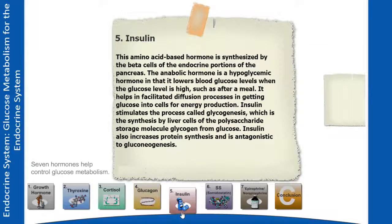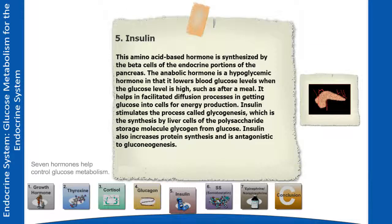Insulin is an amino acid-based hormone synthesized by the beta cells of the endocrine portions of the pancreas. This anabolic hormone is a hypoglycemic hormone in that it lowers blood glucose levels. When the glucose level is high, such as after a meal, it helps in facilitated diffusion processes in getting glucose into cells for energy production. Insulin stimulates glycogenesis — the synthesis by liver cells of the polysaccharide storage molecule glycogen from glucose. Insulin also increases protein synthesis and is antagonistic to gluconeogenesis.